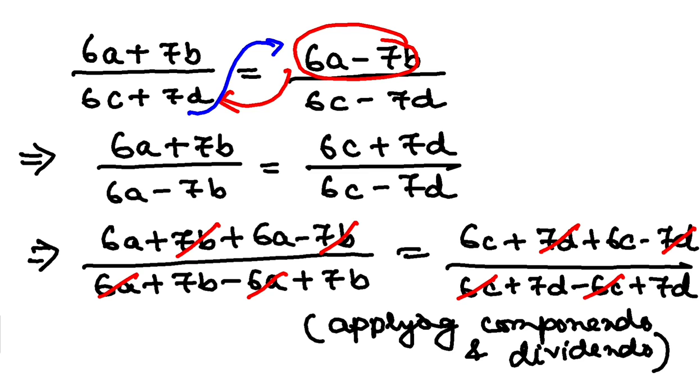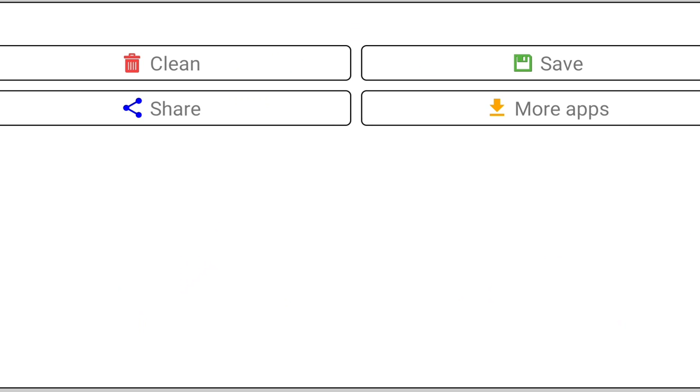So I am left with 6a plus 6a is 12a, 12a by 7, 14 rather, 14b equal to 12c by 14d, isn't it? Let me write it clearly so that you understand better.